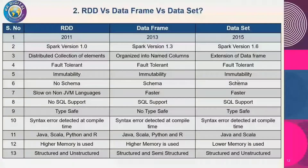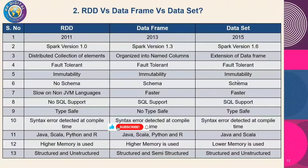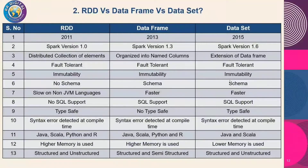RDD always stores data in a distributed collection of elements. DataFrame organizes data into named columns, and Dataset is an extension of DataFrame. All three — RDD, DataFrame, and Dataset — are fault tolerant, meaning if data is lost, it will recreate that particular piece of data. For example, if data in RAM is lost, it will be recreated. All three also support immutability.